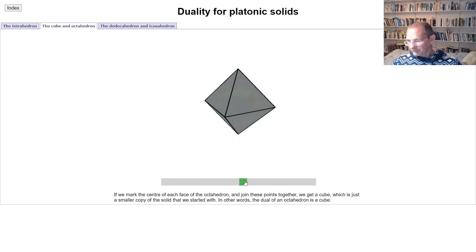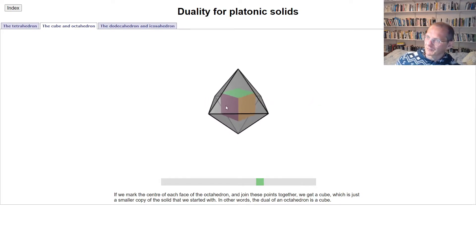And we can repeat the process. So we take the centers of the faces of the octahedron and we join those up. What we find is that we get a cube again.